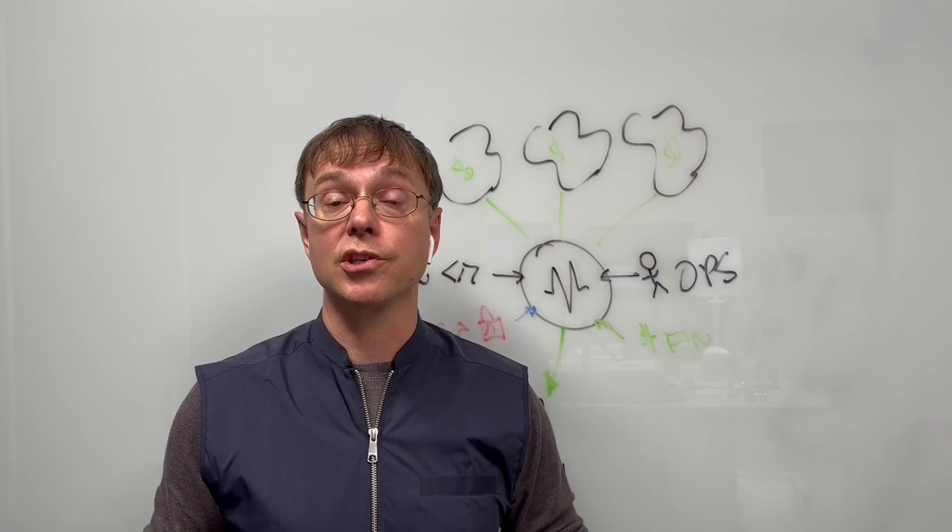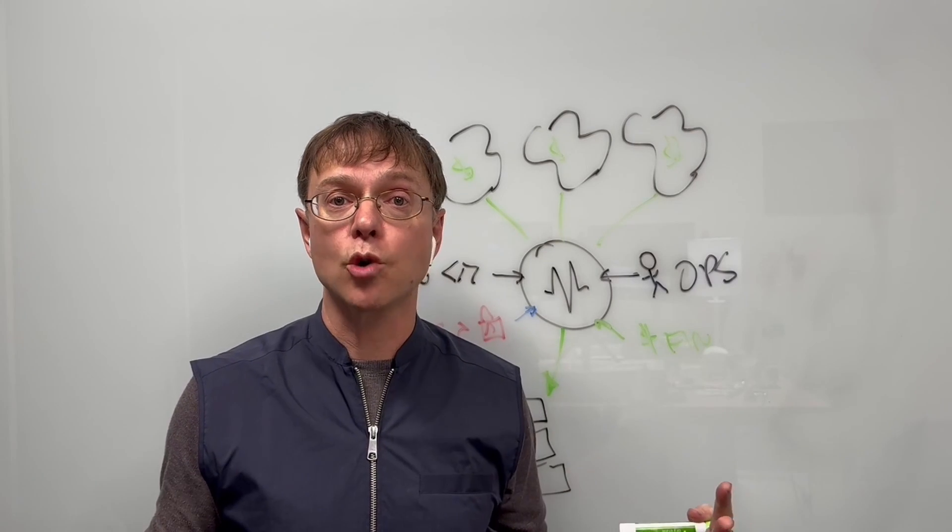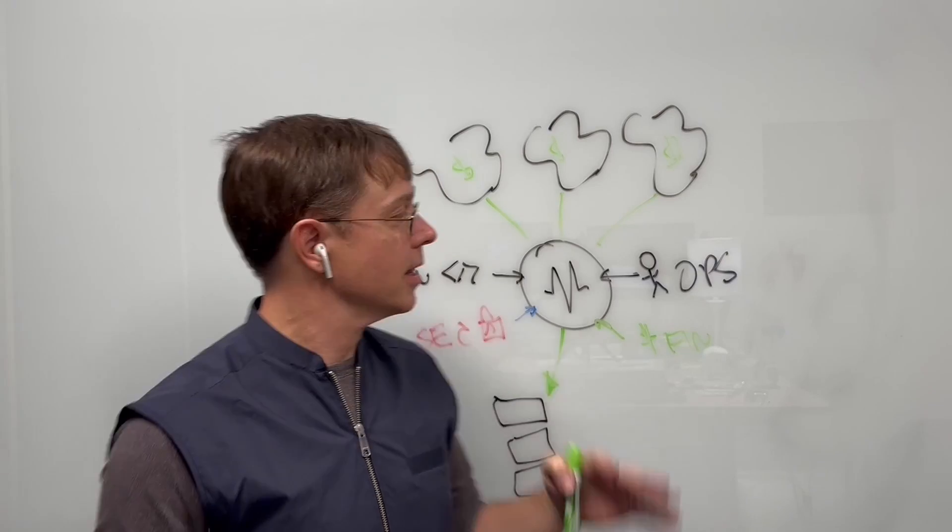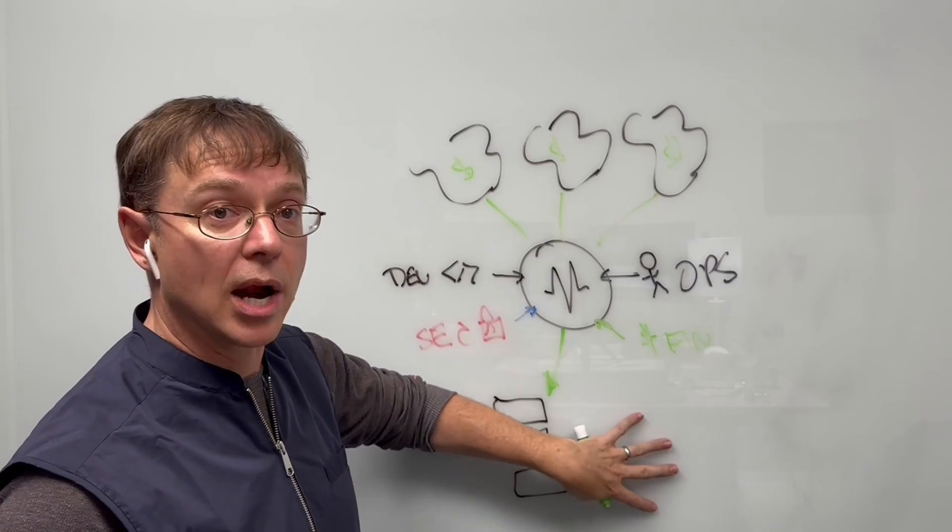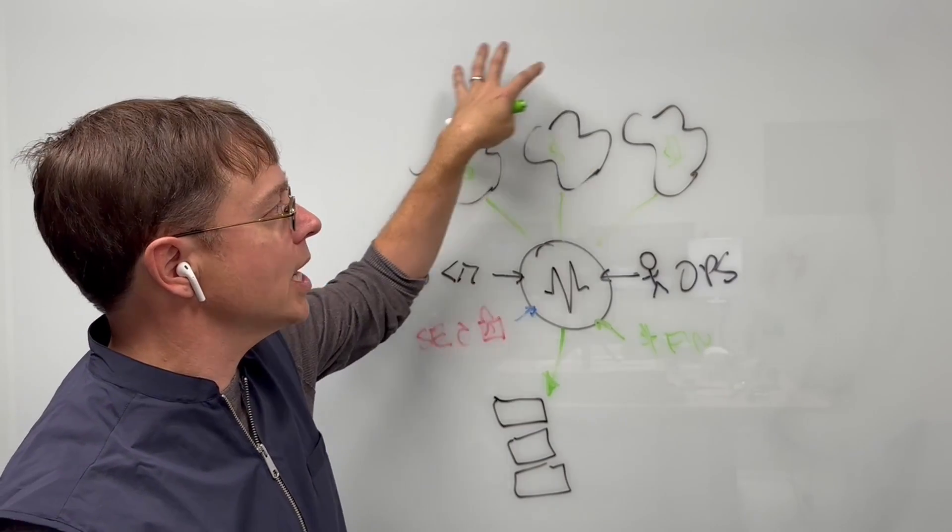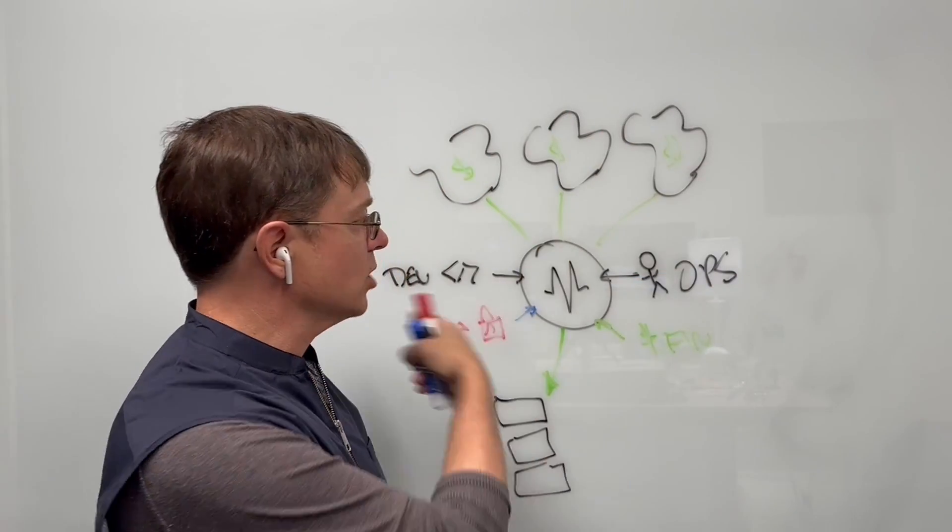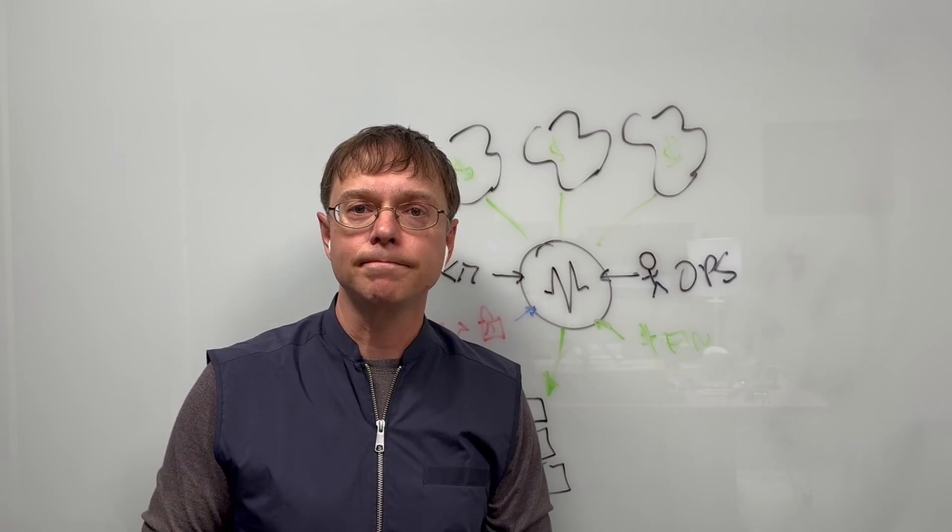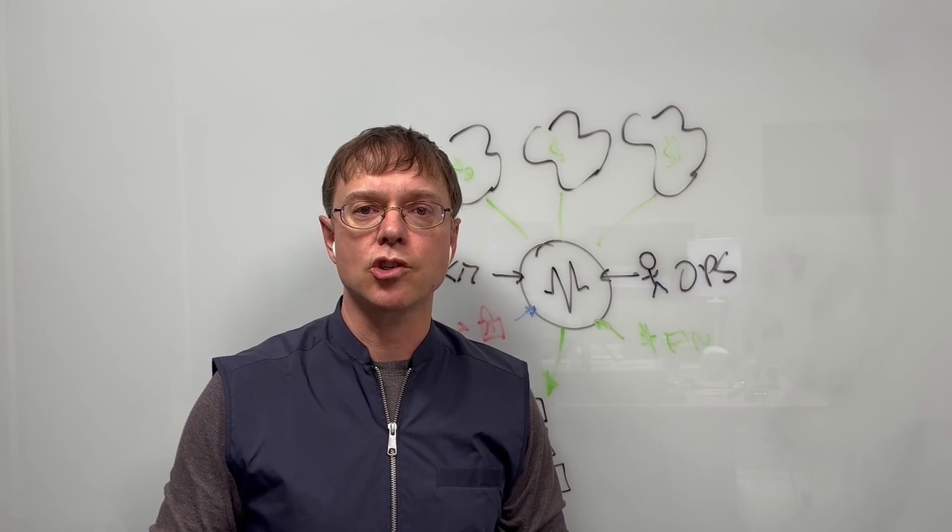So back to what does Morpheus do? We're a unified control plane that helps large enterprises orchestrate this intersection of private hypervisors like VMware and Nutanix, public clouds like AWS, Azure, and GCP, as well as the interplay between all these teams. Hopefully that was helpful. Thanks. Have a great day. If you have any questions, look us up.